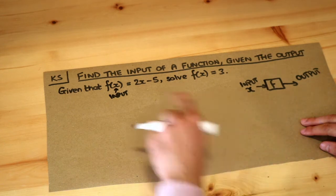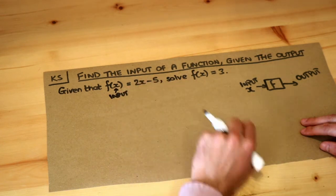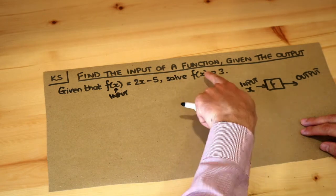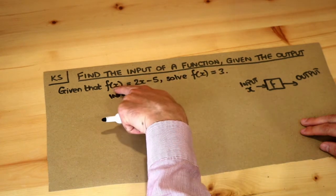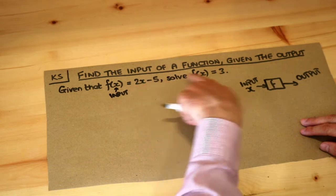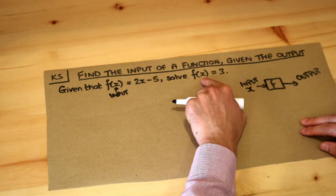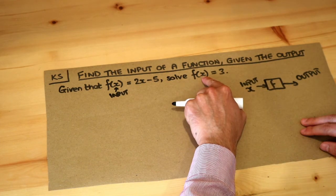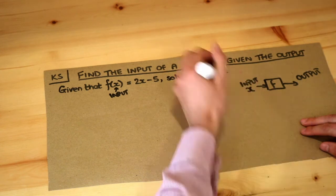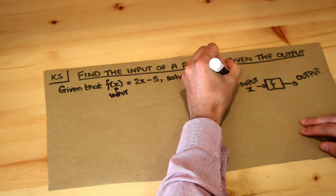Previously we saw how to work out the output if you had a particular input. Now we're doing the reverse. We're saying if the output of your function f(x) equals 3, what would be the input x that gives you an output of 3? Because the output is 3 this time, not the input.